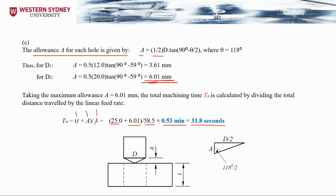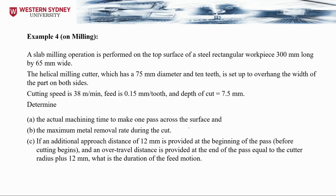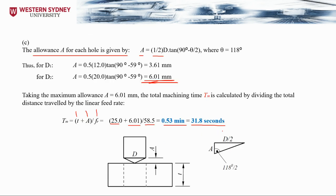We use the longest approach value because that is what actually happens — even if the first drill finishes, the second drill still needs to complete its pass. The time is calculated based on the longest distance, not the shortest.